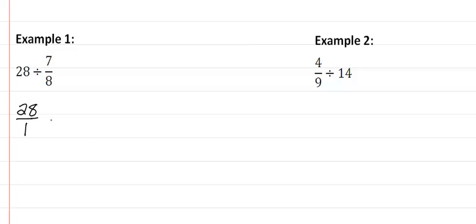And then because we have a division problem, we want to multiply by the reciprocal of our second number. In this case, 8 sevenths.